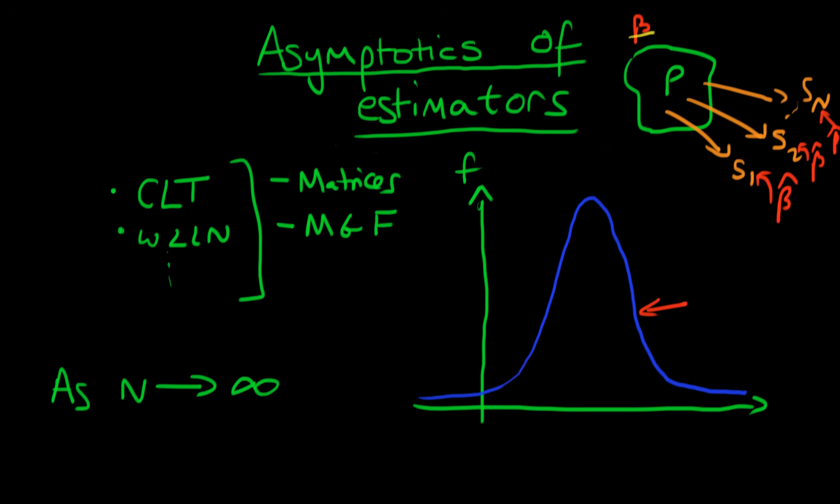So one thing we would quite like our estimator to do would be, well as our sample size gets bigger and bigger, we would like our distribution to tend to being centered around the true population parameter. So even though, let's say this is our sampling distribution for beta hat when n is let's say 1000, and we can see that this is actually a biased estimator beta hat in this circumstance because it's not centered around the true population parameter beta.